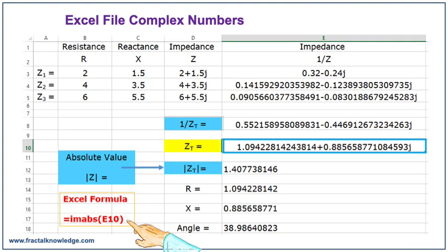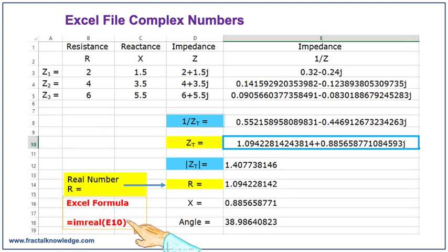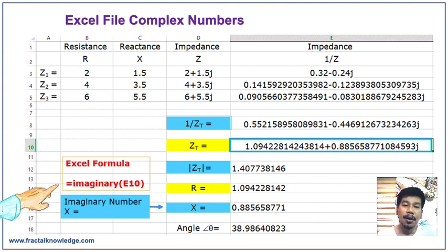Now to get the absolute value of that impedance which we can use in the calculation of short circuit, the formula that we can use is equals IMABS, open quantity, move the cursor to E10 the impedance, close quantity, enter. We've got the value of the absolute impedance Z 1.4077 ohms. You can just copy the R value and the X value from the complex number, but you can see we have also Excel formula for that. We can use equals IMREAL E10. For the reactance, the Excel formula is equals IMAGINARY, open quantity E10, close quantity, enter.